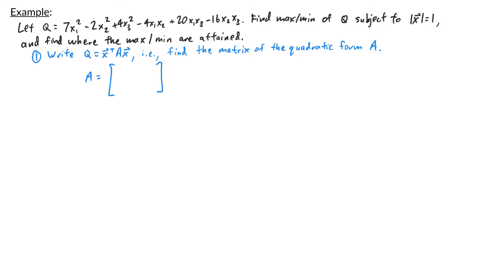The coefficient of x1 squared is 7, so that's my first diagonal entry. The coefficient of x2 squared is negative 2, so that's my second diagonal entry. The 1,2 entry and the 2,1 entry of A add up to the coefficient of x1x2, which is negative 4, so those entries are negative 2 and negative 2 — they have to be the same because A is symmetric. The 1,3 and 3,1 entries add up to the coefficient of x1x3, which is 20, so those entries are 10 and 10. The 2,3 and 3,2 entries add up to the coefficient of x2x3, which is negative 16, so those entries are negative 8 and negative 8. That's my matrix A.